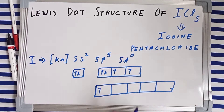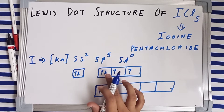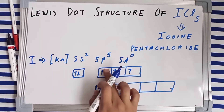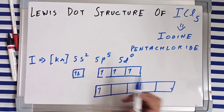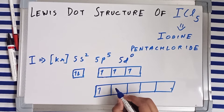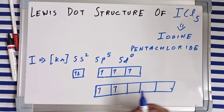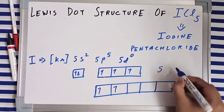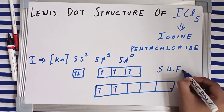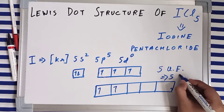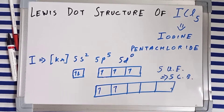In the second excited state, one more electron can shift and jump into one of the orbitals of the d subshell. Now you've got one, two, three, four, five — five unpaired electrons — which means iodine can now make five covalent bonds.